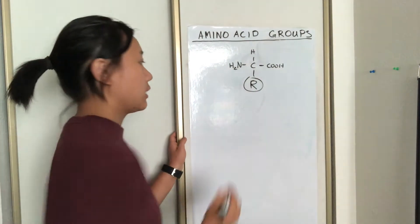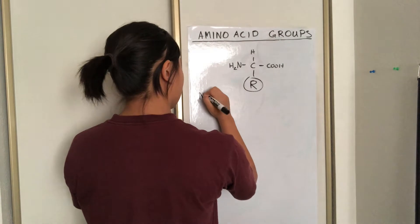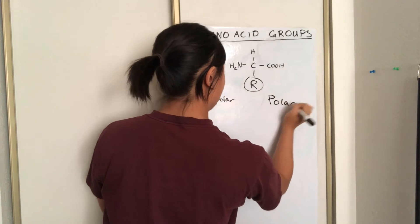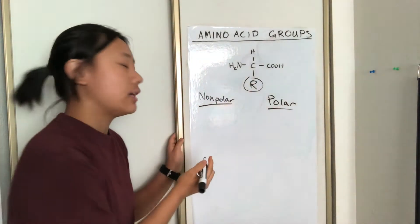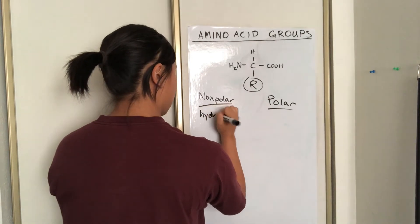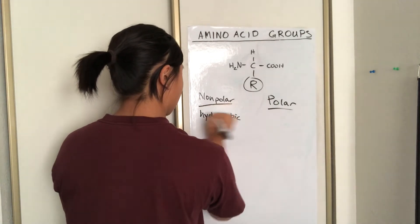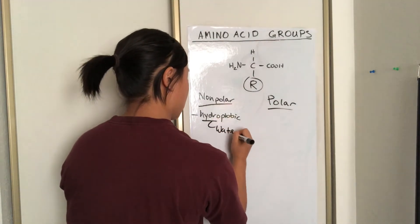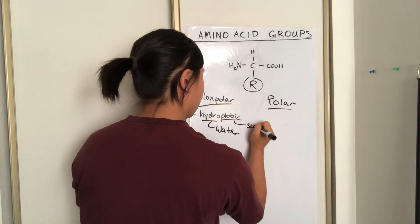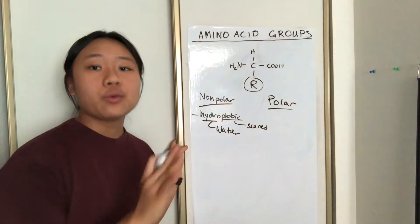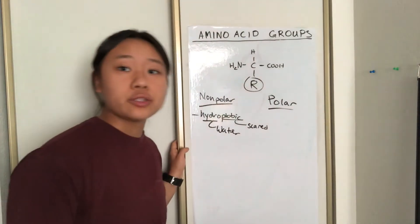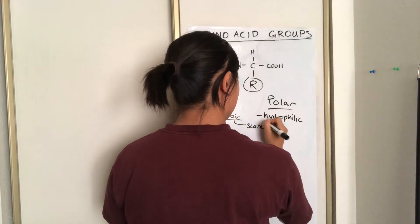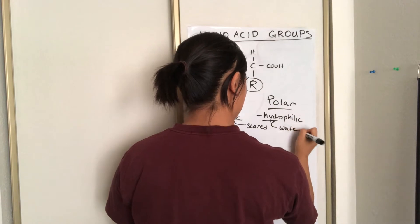Amino acids are divided into two main factions: there's non-polar and there's polar. Non-polar amino acids are hydrophobic, because 'hydro' means water and 'phobic' is similar to phobia — they don't like water, they want to avoid water. Polar, on the other hand, because water is polar and polar things like polar things in nature, they are hydrophilic, which means they are water-loving.